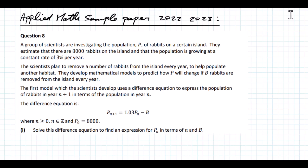The scientists plan to remove a number of rabbits from the island every year to help populate another habitat. They developed mathematical models to predict how P will change if B rabbits are removed from the island every year. The first model uses a difference equation: Pn+1 = 1.03 times Pn minus B, where n is a positive integer and P0 = 8,000. Solve this difference equation to find an expression for Pn in terms of n and B.